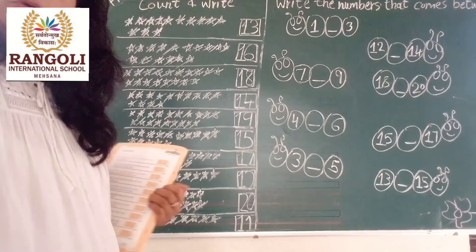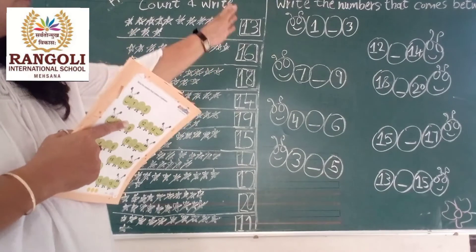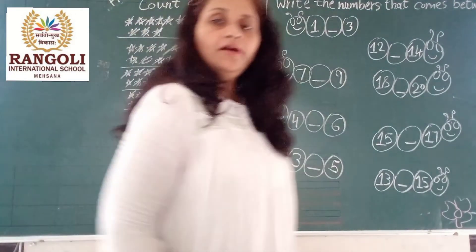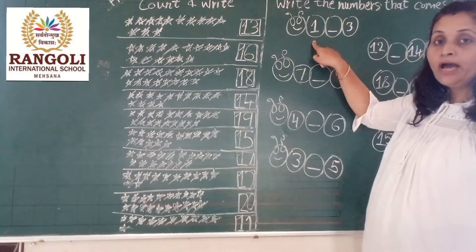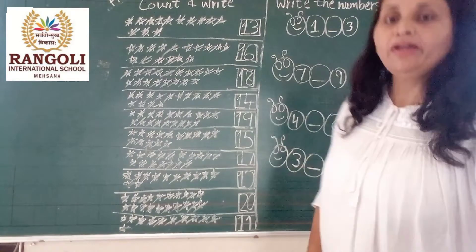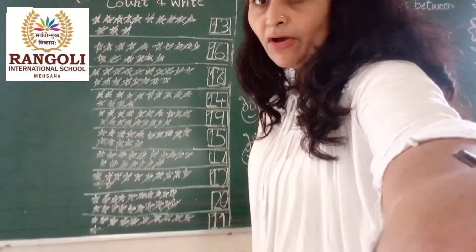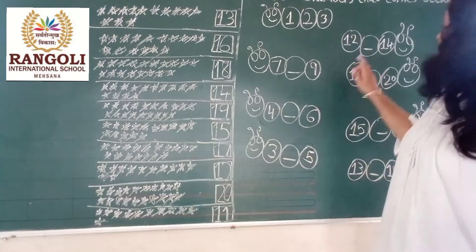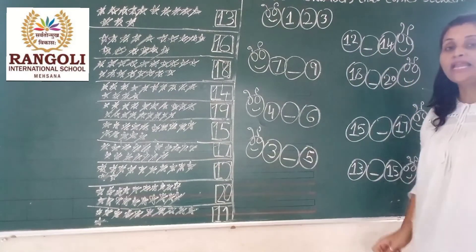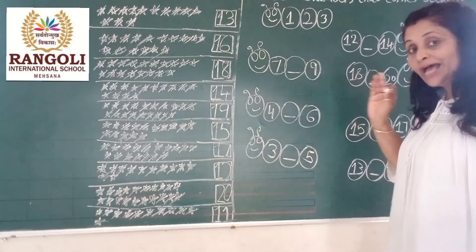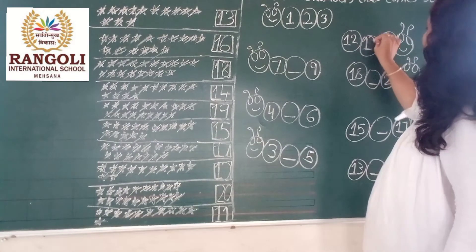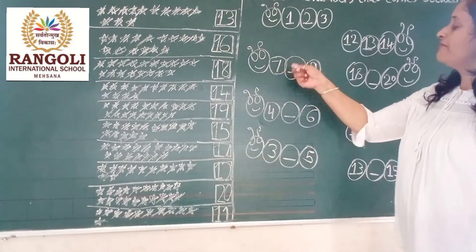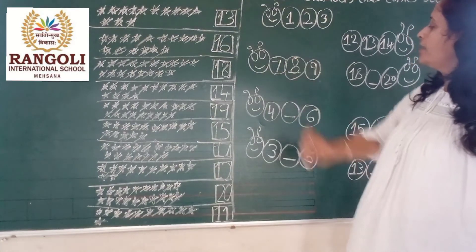After this, turn your page and come to page 20. Write the number that comes between. So, look here — which number? 1. What comes between 1 and 3? Write here 2. Then 12 and 14 — what comes between? 11, 12, 13. Yes, after 12 is 13, and before 14 is 13. Then what comes between 7 and 9? After 7 is 8, and before 9 is 8. So, write here 8.